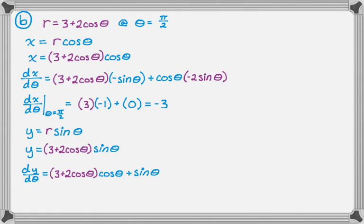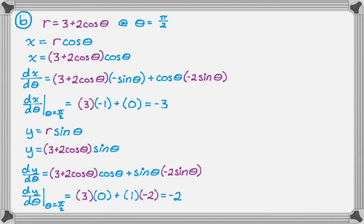So dy d theta is going to be the first, the derivative of sine is cosine, plus second is sine, the derivative of the first we got before was negative two sine of theta. And now we need to evaluate this at pi over two. It's the same idea, so cosine is going to be zero, sine is going to be one.